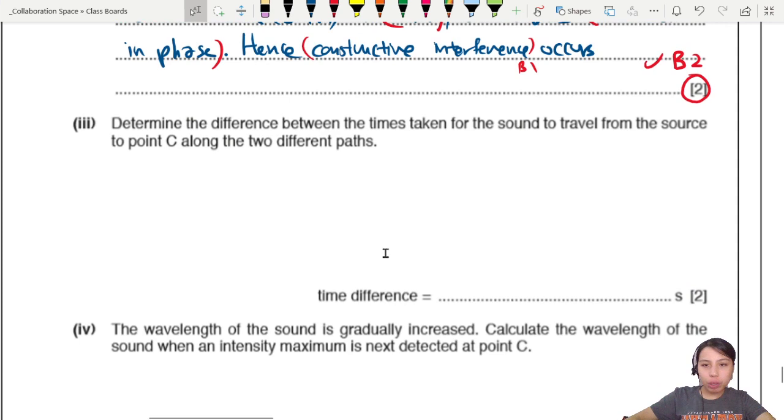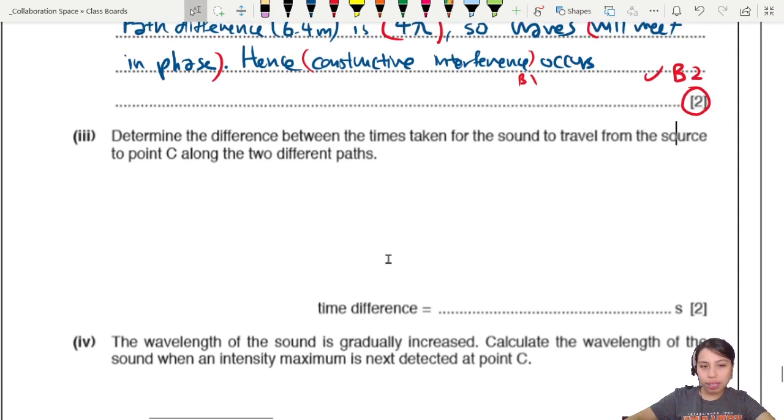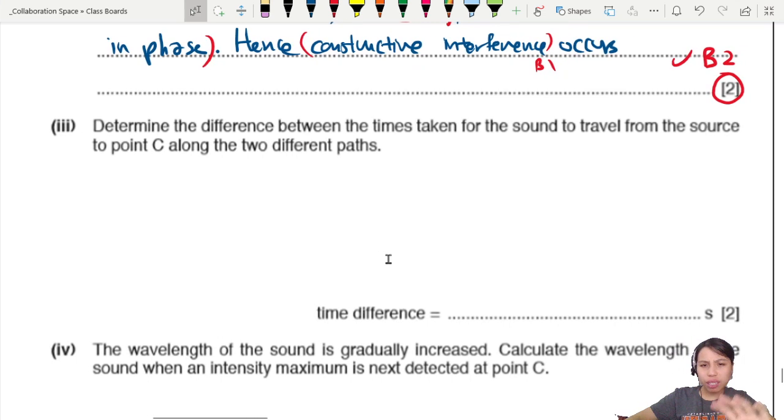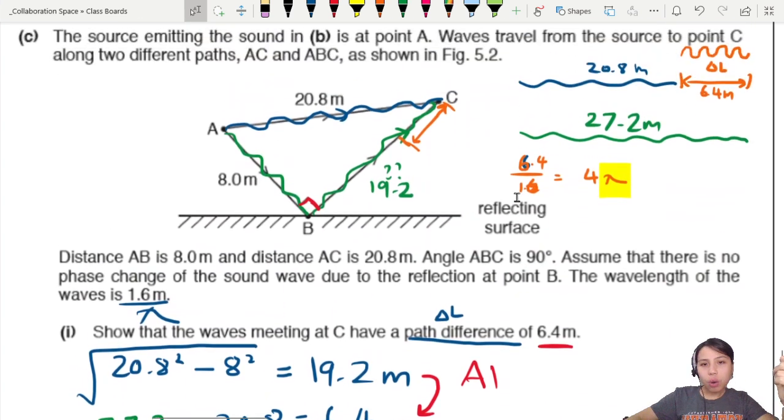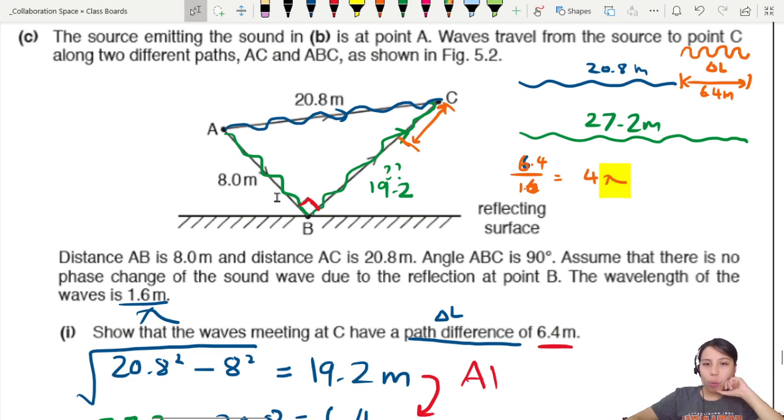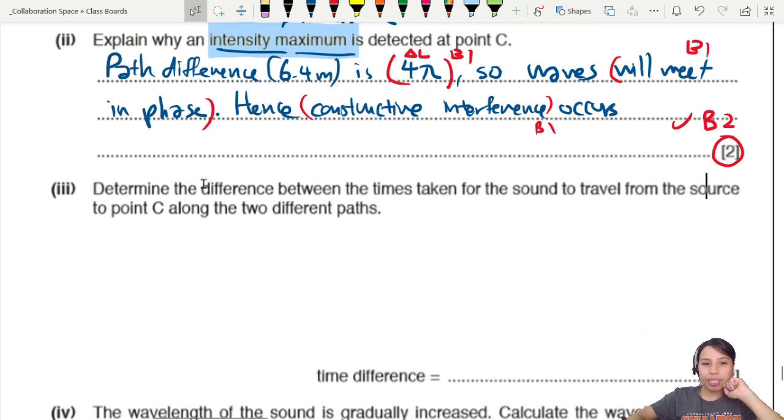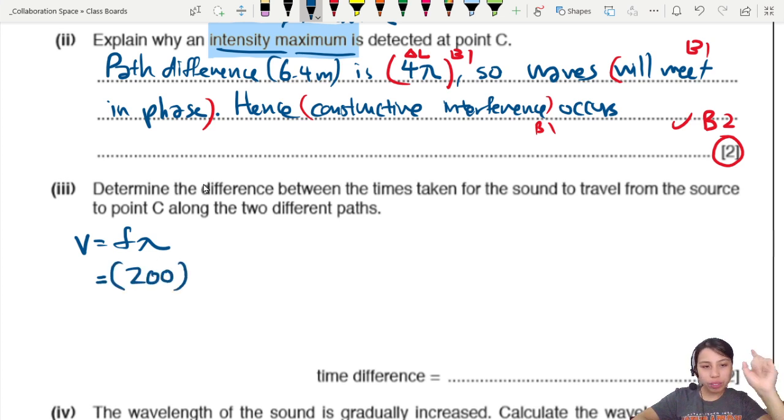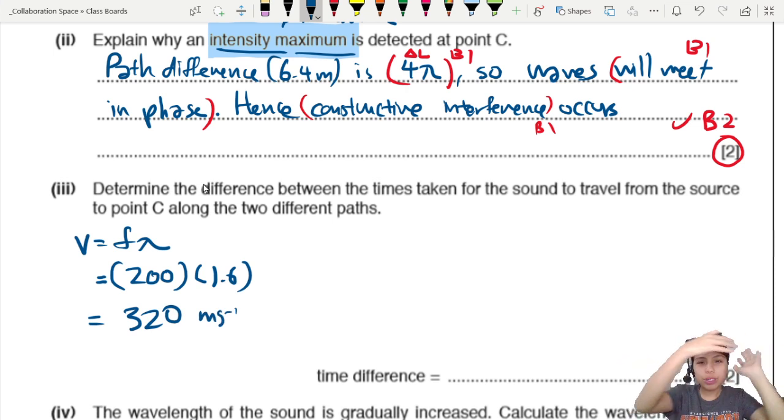Now let's see. Determine the difference between the time taken for the sound to travel from source to point C along two different paths. Because one wave travels short distance, the other wave travels quite a long distance. But what is the speed of the wave? We need to know that. Let's find that first. So V equals F lambda, or F over T also can. This will be the frequency which we found earlier, 200 hertz from the CRO, times 1.6. This will give us 320 meters per second.